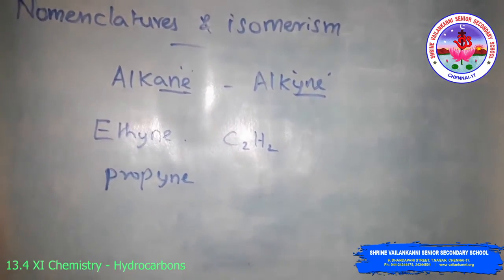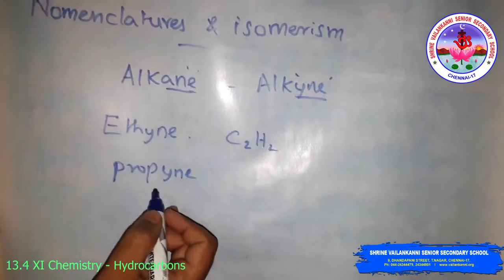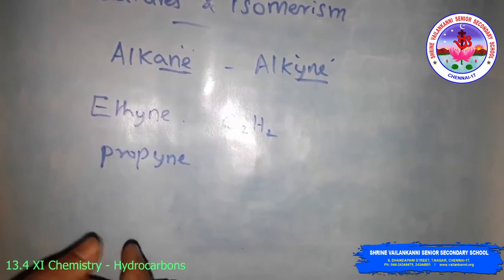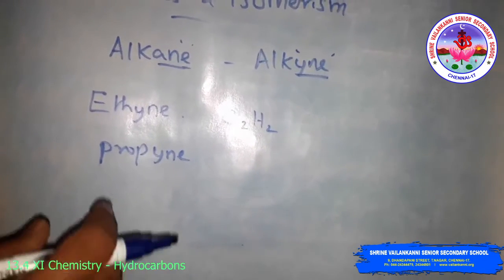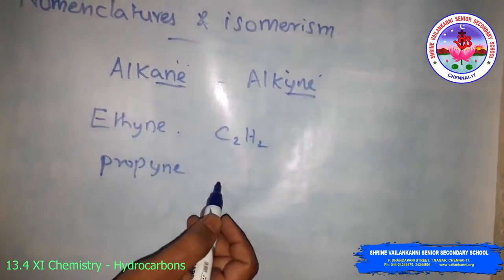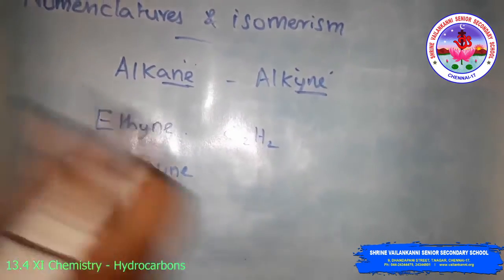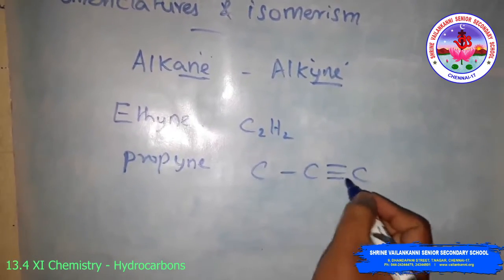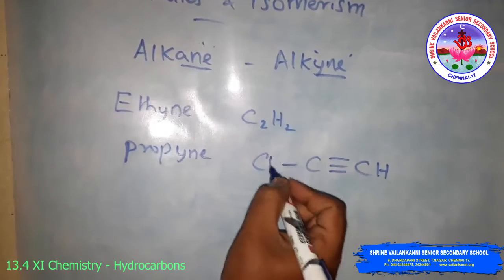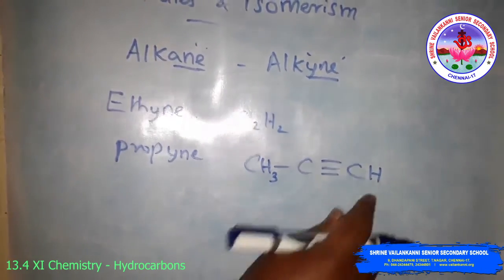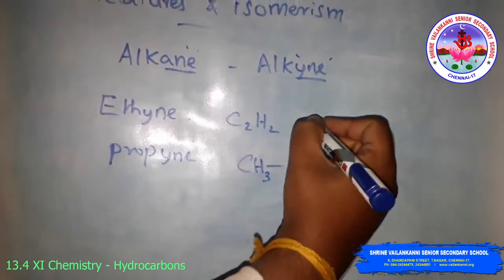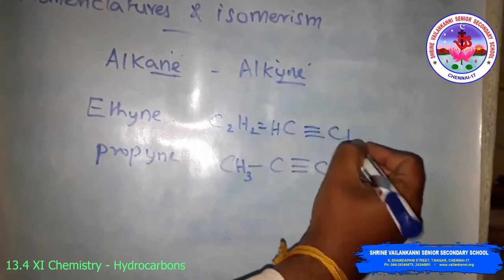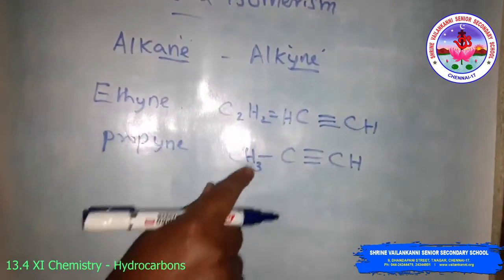The ethyne and propyne have only one structure each. Propyne has the formula CH3C≡CH — that is the only one structure. The ethyne and propyne have only one possible structure.